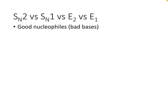Hi everyone! In this video we're going to summarize everything we've learned in chapter 7. So we're going to talk about SN2 versus SN1 versus E2 versus E1. What we'll do is step through some hypothetical reactions.